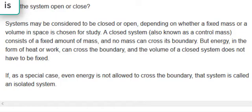A closed system, also known as a control mass, consists of a fixed amount of mass and no mass can cross its boundary. But energy, in the form of heat or work, can cross the boundary and the volume of a closed system does not have to be fixed.